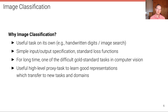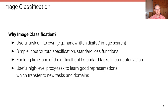Furthermore, image classification is a useful high-level proxy task for learning good representations that transfer well to new tasks and domains. These representations are useful for transfer learning. Given a large labeled dataset, we can train a representation, then take that model and fine-tune it on a smaller dataset for a different task — such as semantic segmentation, object detection, or even reconstruction — and get away with much fewer data on the target task because we pre-trained on a very large dataset using this image classification proxy task.